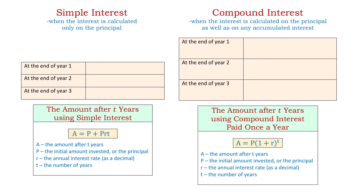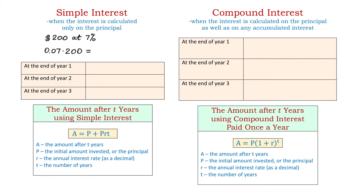In this video, we will see the difference between simple interest and compound interest. Let's say we want to invest $200 at 7% annual interest. If we invest at 7%, then at the end of the first year, we will get back $200 plus 7% of $200. To find what is 7% out of $200, we need to convert 7% into a decimal by dividing 7 by 100, which gives us 0.07. Then, we multiply it by 200 and we get $14.